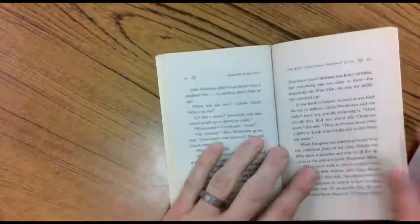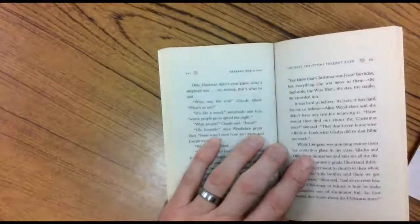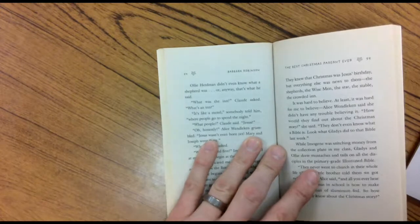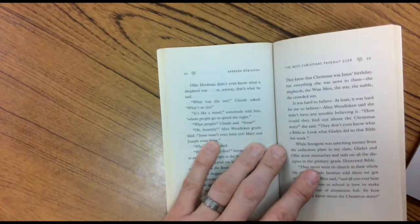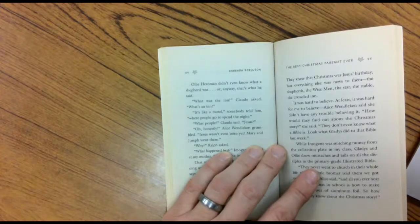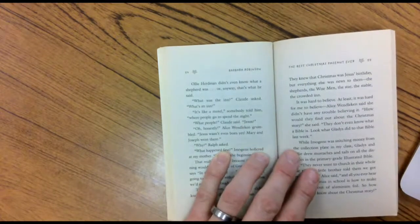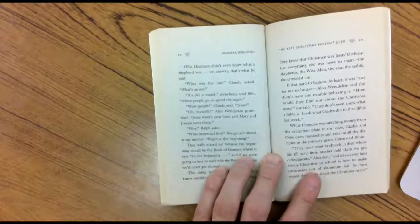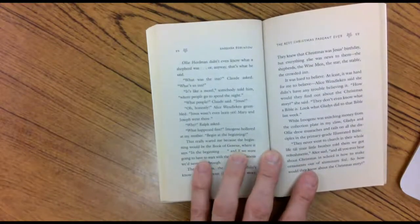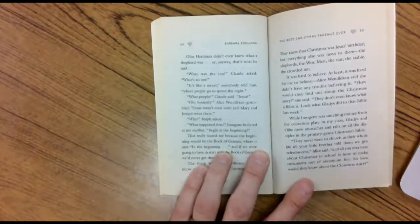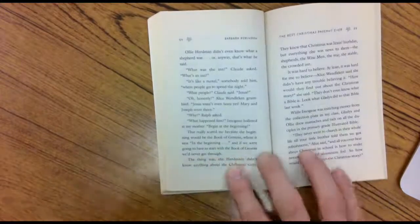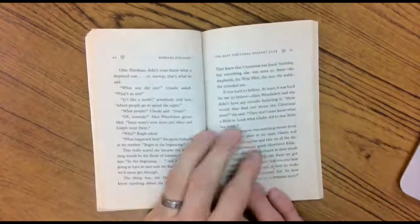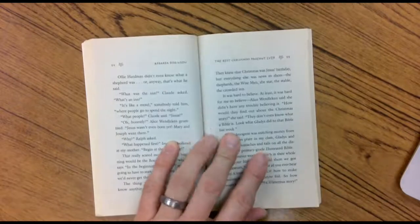One kid grumbled, Jesus wasn't even born yet. Mary and Joseph went there. Why, Ralph asked. What happened first? Imogene hollered at my mother. Begin at the beginning. That really scared me because the beginning was the book of Genesis, where it said, in the beginning, God created the heavens and the earth. And if we were going to have to start with the book of Genesis, we'd never get through. The thing was, the Hermanns didn't know anything about the Christmas story. If you don't know anything about the Christmas story, this might be the best place for you to be, church.